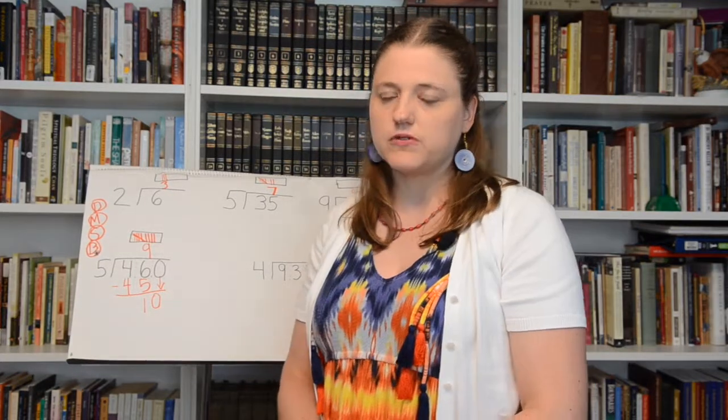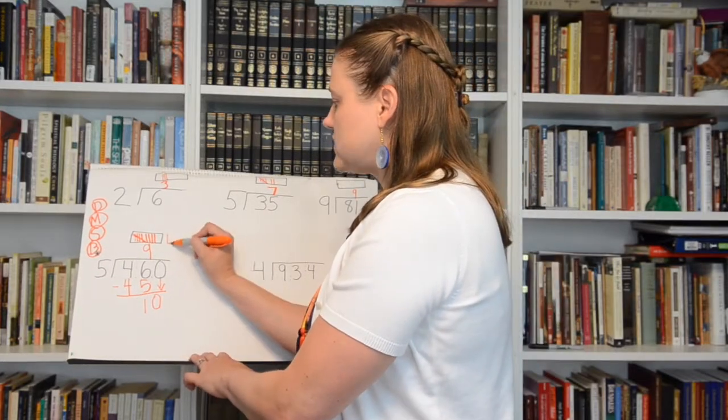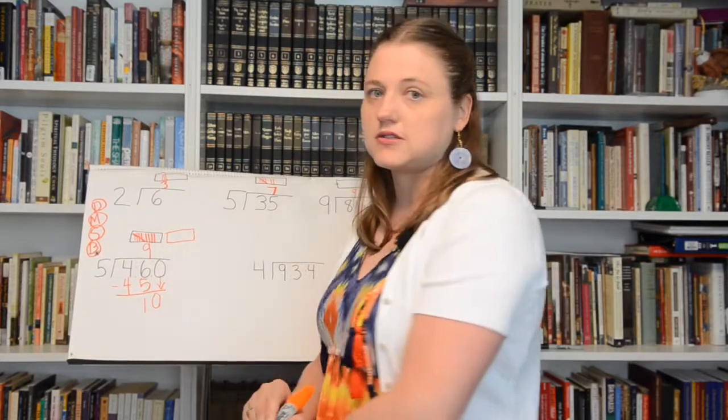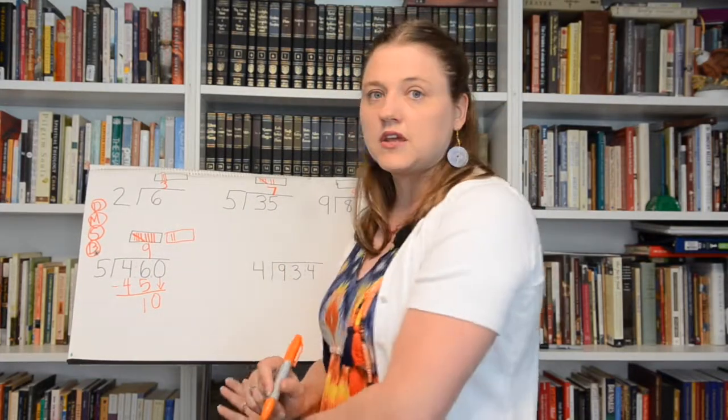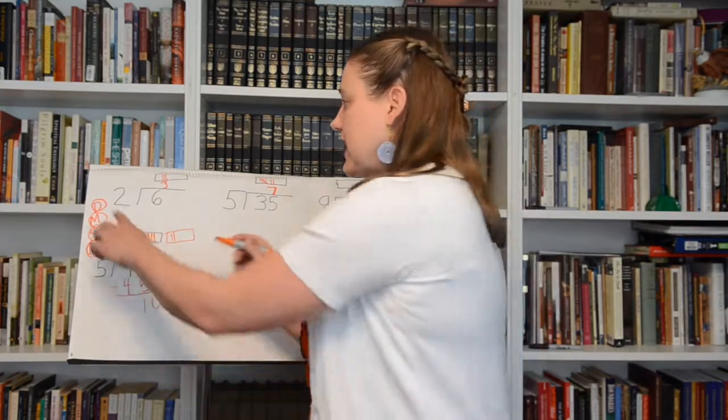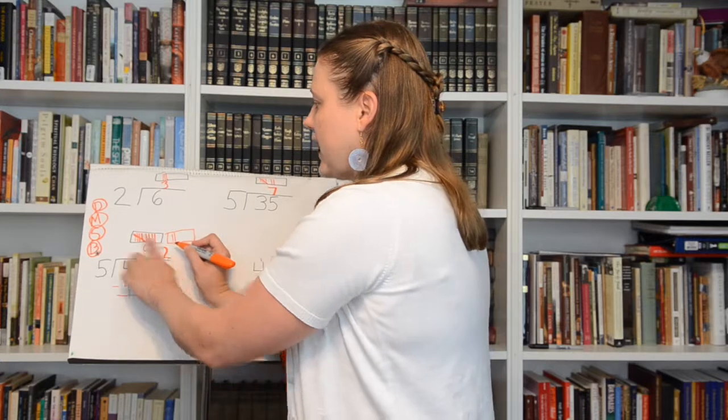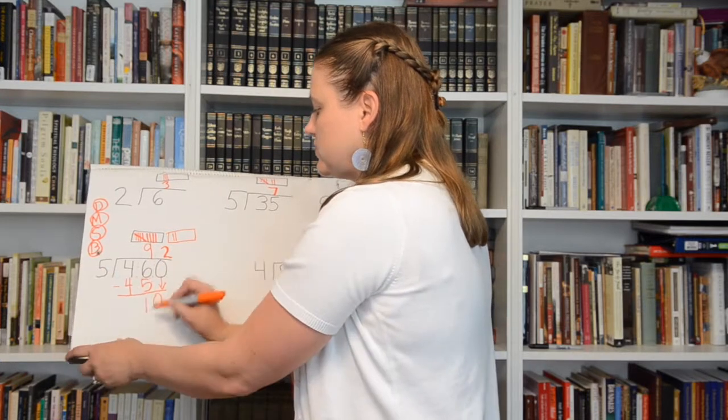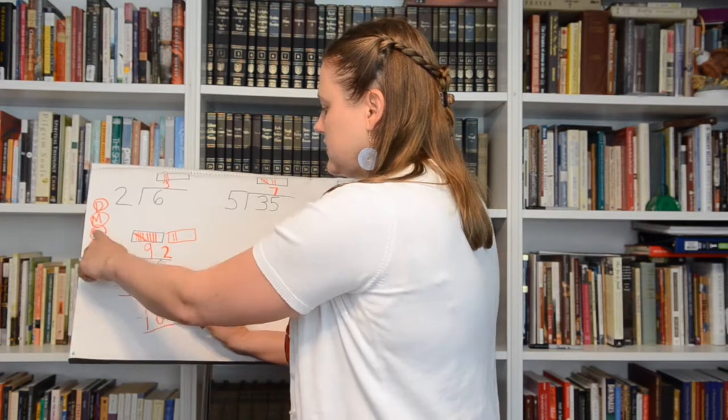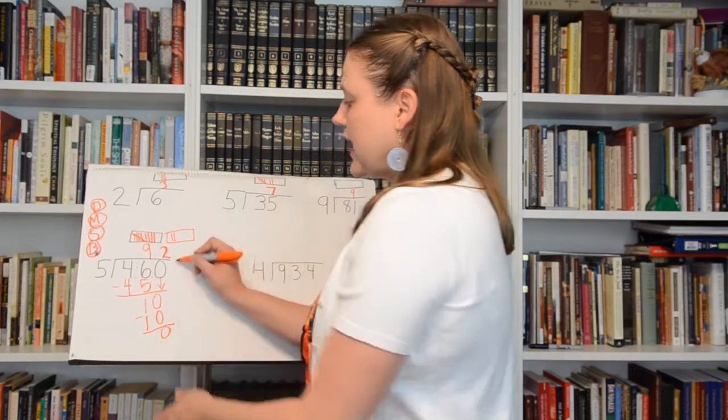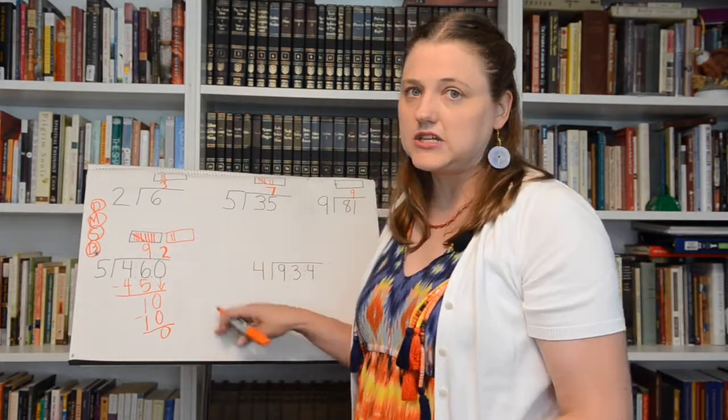So now we're going to say five goes into ten. I need another tally box and I'm going to count by fives until I get to ten. Five, ten. So five goes into ten, I divided it two times. So I write my two. Five times, we're on multiply. Five times two is ten. We're going to subtract, which is zero. And I have nothing left to bring down and no remainder. So that's my answer, ninety-two.